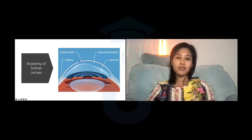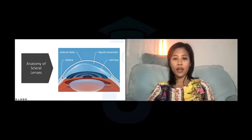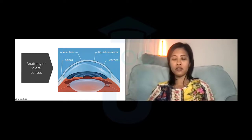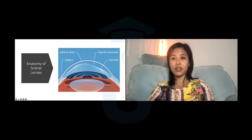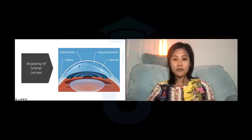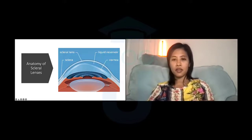Looking at one of these on side view, the scleral lens completely vaults over the corneal surface and rests on the scleroconjunctival shape. In between the back surface of the lens and the front surface of the cornea, it's filled with a liquid reservoir. Typically this is preservative-free saline solution, but it can also be filled with preservative-free medications and used as a liquid bandage contact lens. This is an irregular cornea — it completely vaults over irregular corneal surfaces and rests on what's typically an unaltered conjunctival scleral shape.